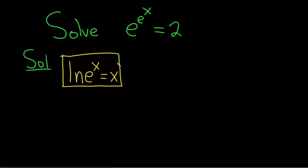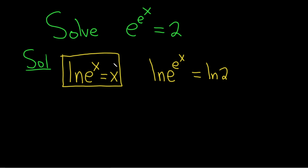So now what we'll do is take the natural log of both sides of this equation. We have the natural log of e to the e to the x equals the natural log of 2. If you look at this formula, you'll notice that this here is our x, so this is going to go away, and we're left with e to the x equals the natural log of 2.